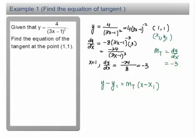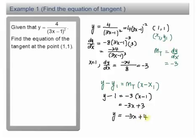Substitute this into the equation. I have y minus 1 equals negative 3 times x minus 1. Expand the bracket, we have negative 3x plus 3. Therefore, the equation of tangent y equals negative 3x. Negative 1 bring over, we have plus 3 plus 1. So the equation of tangent is negative 3x plus 4.